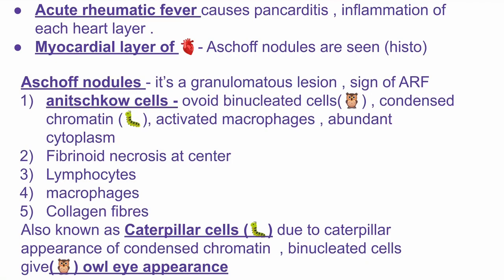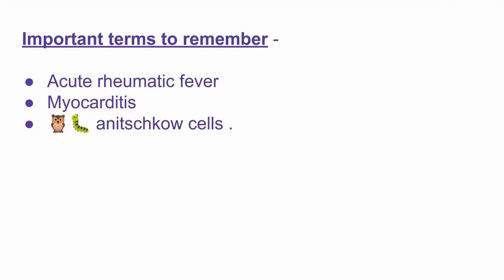Apart from Anitschkow cells, fibrinoid necrosis is present at the center. Lymphocytes, macrophages, and collagen fibers are also present. Anitschkow cells are called caterpillar cells because of the condensed chromatin, and they show an owl eye appearance because of the ovoid binuclear appearance.